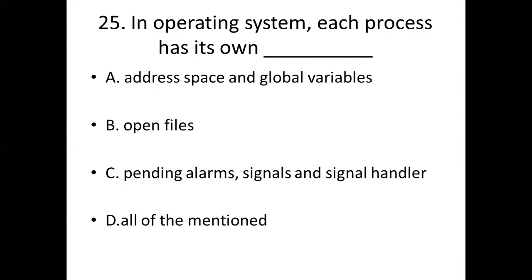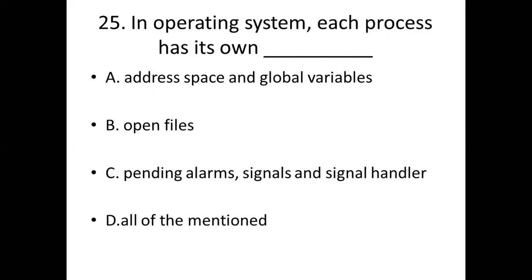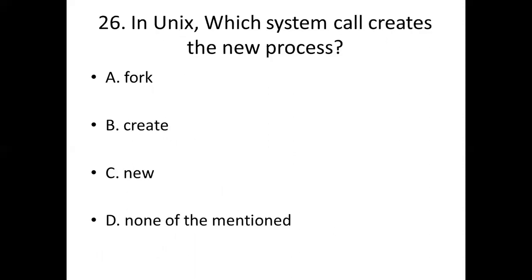Twenty-fifth bit: In operating system, each process has its own dash. Option A: Address spacing and global variables. Option B: Open files. Option C: Pending alarms, signals and signal handler. Option D: All of them mentioned. Answer: Option D, all of them mentioned.